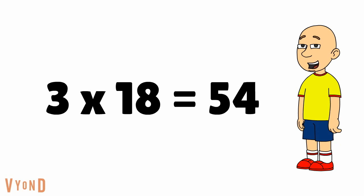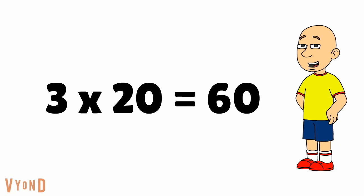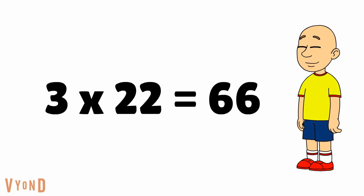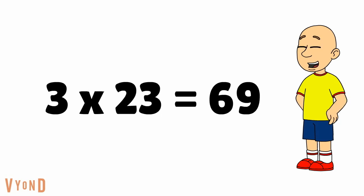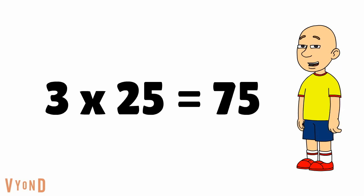3 times 18 equals 54. 3 times 19 equals 57. 3 times 20 equals 60. 3 times 21 equals 63. 3 times 22 equals 66. 3 times 23 equals 69. 3 times 24 equals 72. And 3 times 25 equals 75.